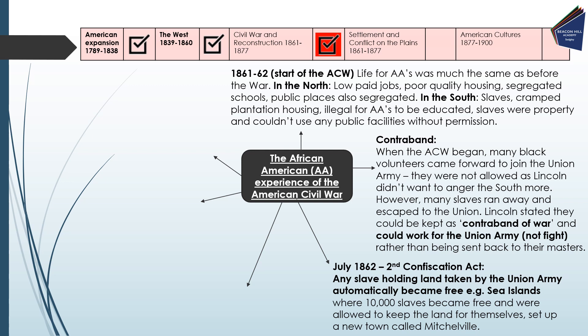In July 1862, the Second Confiscation Act meant that any slave-holding land taken by the Union army automatically became free. For example, on the Sea Islands, 10,000 slaves became free and were allowed to keep the land for themselves, setting up a new town called Mitchellville. The Sea Islands would be a great specific example to use in an exam answer showing the African-American experience of the Civil War, as by 1862 things were starting to improve.